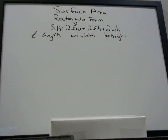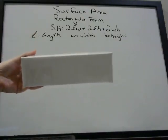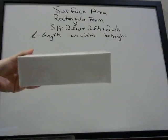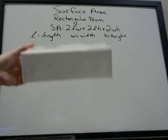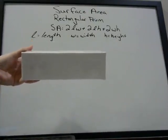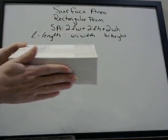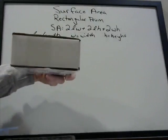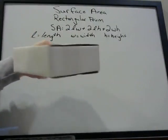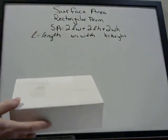First of all, let's figure out what a rectangular prism is. It is basically a box — that's a rectangular prism. It's also sometimes called a right prism because these are all right angles. You can see every face of this object is a rectangle, and that's important because that is the key to this whole formula.